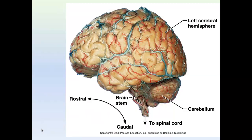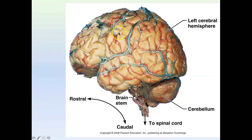This is the human brain. Notice that most of our brain is going to be this large cerebrum. The cerebrum has these bumps called gyri — gyrus is singular. Then we have these small grooves called sulci, or sulcus in singular. So most of our brain is going to be the cerebrum.